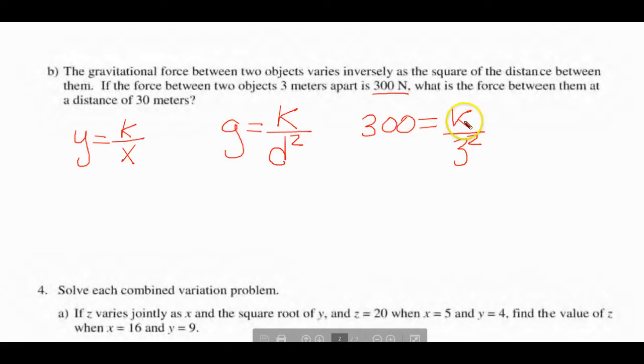What is the force when the distance is 30 meters? Well, we have to determine what K is first. So this becomes a 9, and we can just cross-multiply. 9 times 300 is 2700. We now can substitute here. G equals 2700. We've determined what K is by filling this formula in. And now, our new distance is 30 meters, but we have to square that. We're going to divide 2700 by this, and when we do that, it ends up being 3.